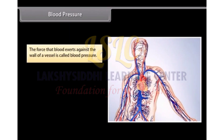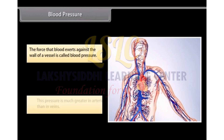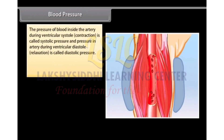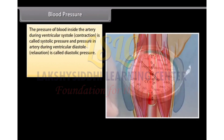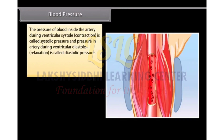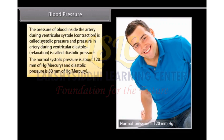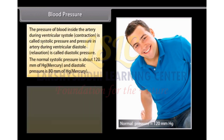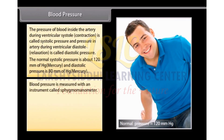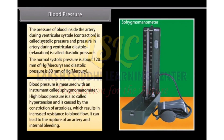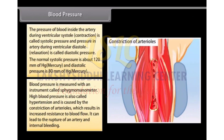The force that blood exerts against the wall of a vessel is called blood pressure. This pressure is much greater in arteries than in veins. The pressure of blood inside the artery during ventricular systole contraction is called systolic pressure, and pressure in the artery during ventricular diastole relaxation is called diastolic pressure. The normal systolic pressure is about 120 mm of mercury and diastolic pressure is up to 80 mm of mercury. Blood pressure is measured with an instrument called sphygmomanometer. High blood pressure, or hypertension, is caused by the constriction of arterioles, which results in increased resistance to blood flow and can lead to the rupture of an artery and internal bleeding.